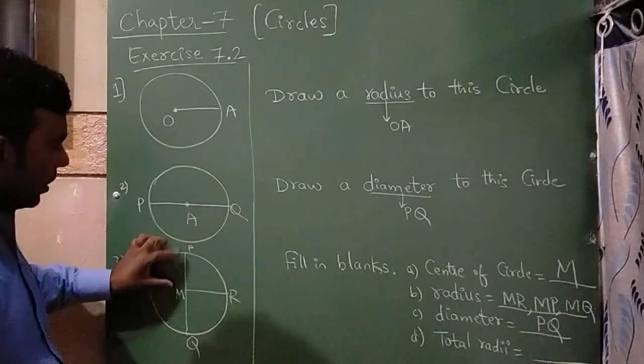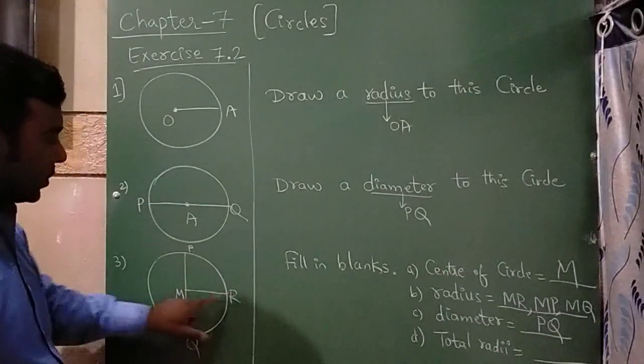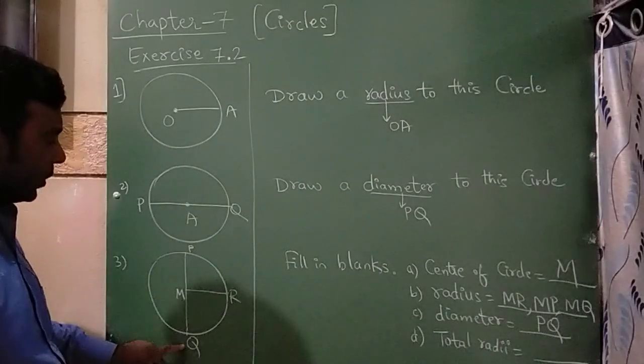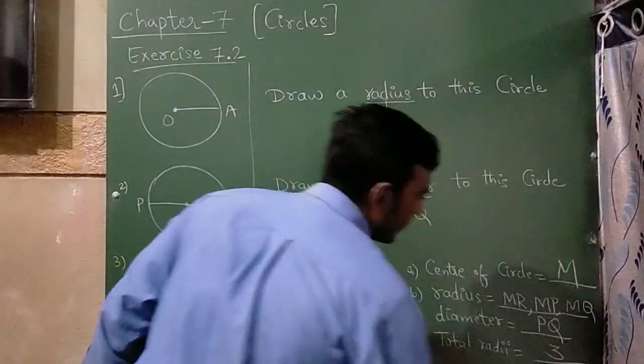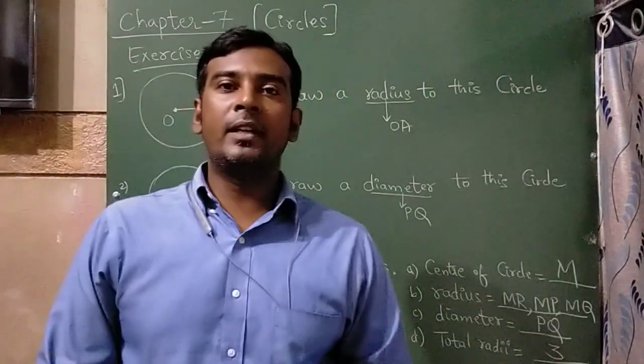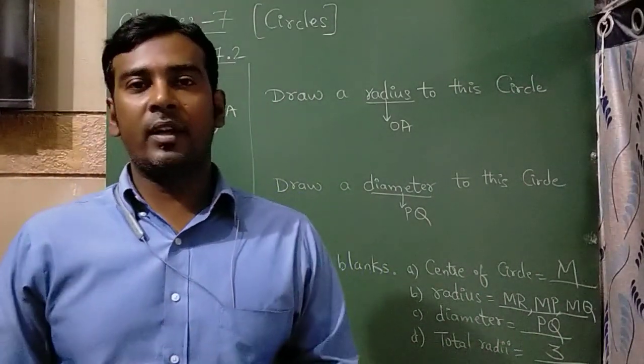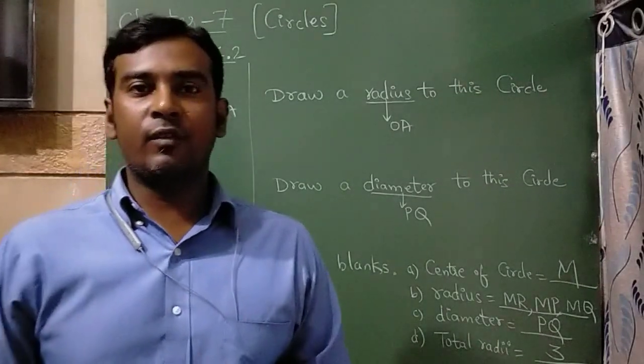Now total radii. As I have told you, M to P is one, M to R is second one, M to Q is third one. So there are totally three radii. So this completes your entire chapter. I hope you understood this very well. Thank you for watching.